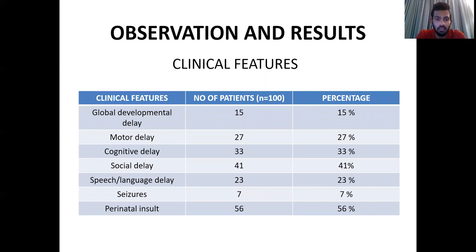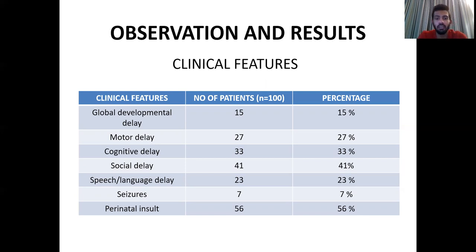Looking at the clinical features, the patients presented with global developmental delay in 15 patients, motor delay in 27 patients, cognitive delay in 33 patients, social delay in 41, speech and language delay in 27, seizures in 7, and history of perinatal insult in 56. These clinical features were overlapping in these patients.